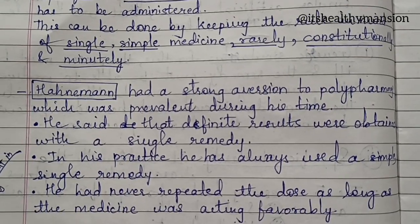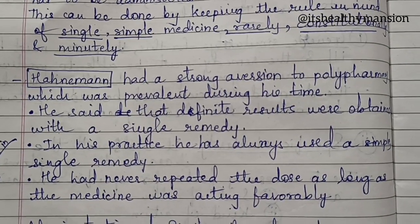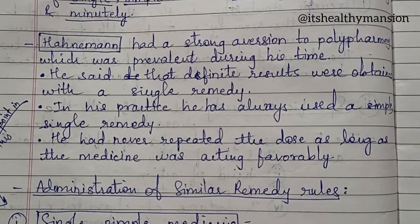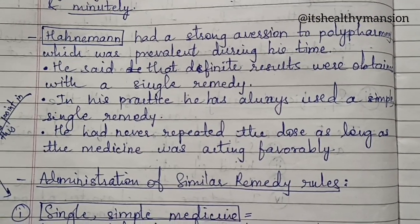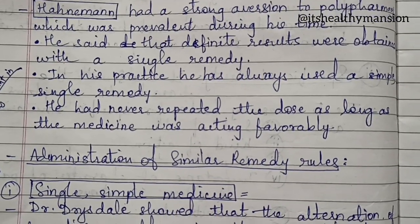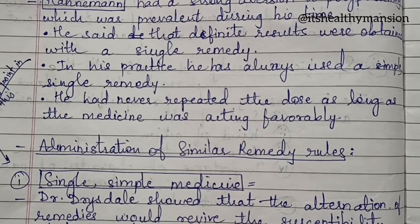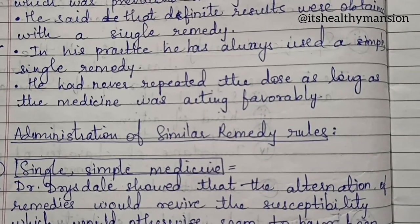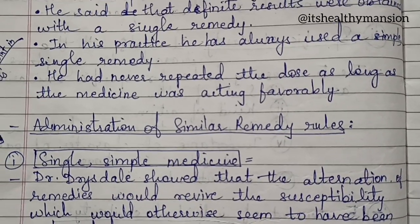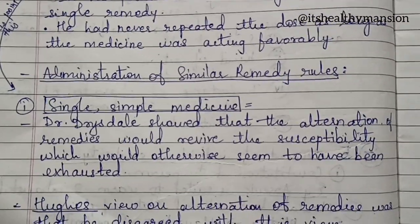Next, this can be done by keeping the rule in mind of single, simple medicine, rarely, constitutional, and minutely. Dr. Honeyman had a strong aversion to polypharmacy, which was prevalent during his time. He said that definite results were obtained with a single remedy. In his practice, he always used a simple, single remedy and never repeated the dose as long as the medicine was acting favorably.